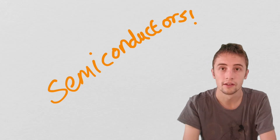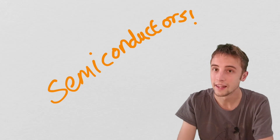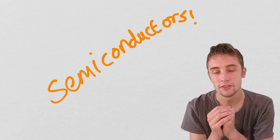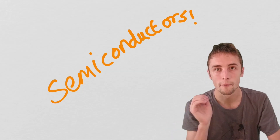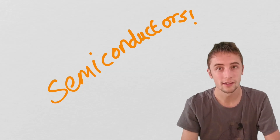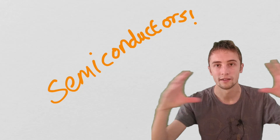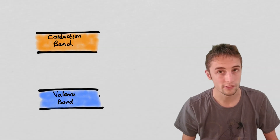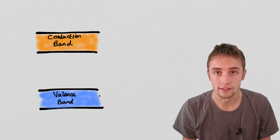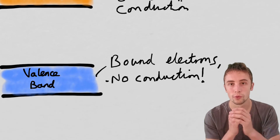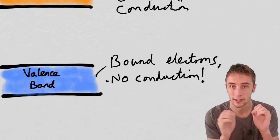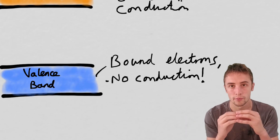To understand conduction in semiconductors, you need to understand that electrons in individual atoms can take discrete energy levels within that atom. If you've got a material with lots of electrons, there are many, many more discrete energy levels that these electrons can take. In fact, there are so many of them that these energy levels can form bands of energy levels. Two of the bands you need to know about are the valence band and the conduction band. Electrons in the valence band are bound to individual atoms — they cannot take part in conduction because they can't flow through the structure.